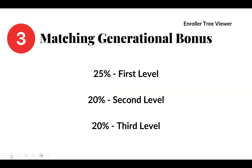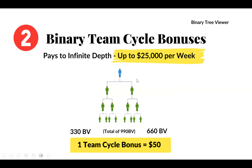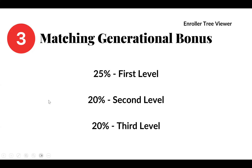The next way is the matching generational bonus. Whoever you personally enroll — that's your first level — you earn 25% of whatever they are earning in team cycle bonuses. So if they're earning $1,000 a week, you're earning 25% or $250 for every single person earning that much. This is unlimited. Whoever they enroll — that's your second level — you earn 20% of whatever they are earning. Whoever they enroll — that's your third level — you earn 20% of whatever they are earning in team cycle bonuses. There are qualifiers on each level, but this is just a brief glimpse of what is possible — unlimited income.